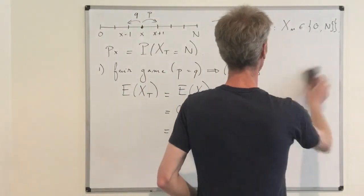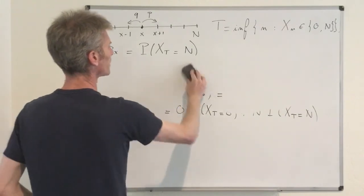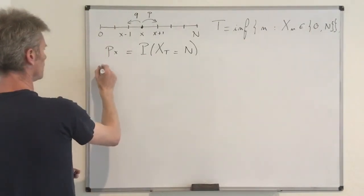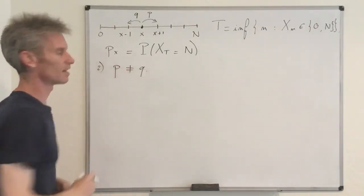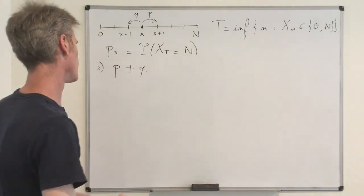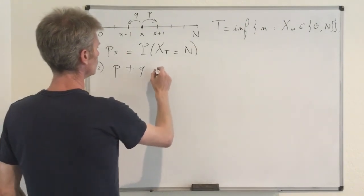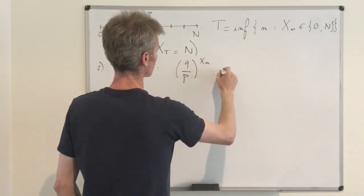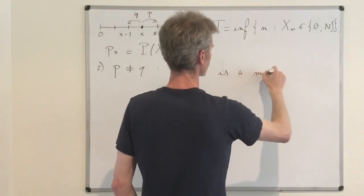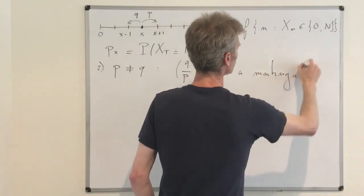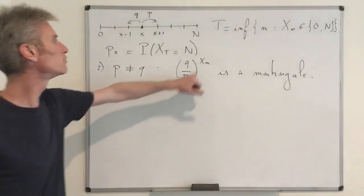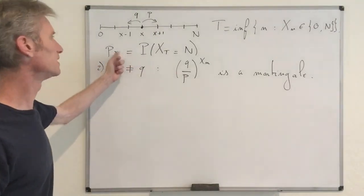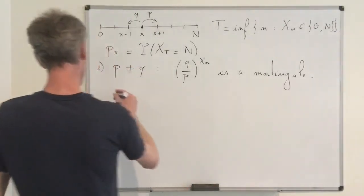Now let's look at the second case where we have an unfair game, meaning P is different from Q. The game may be favorable or unfavorable. In this case, it turns out we can prove that (Q/P)^{X_n} is a Martingale. That's going to be the first step of the proof, and once we establish that, we can again use the Optional Stopping Theorem to compute P_X.